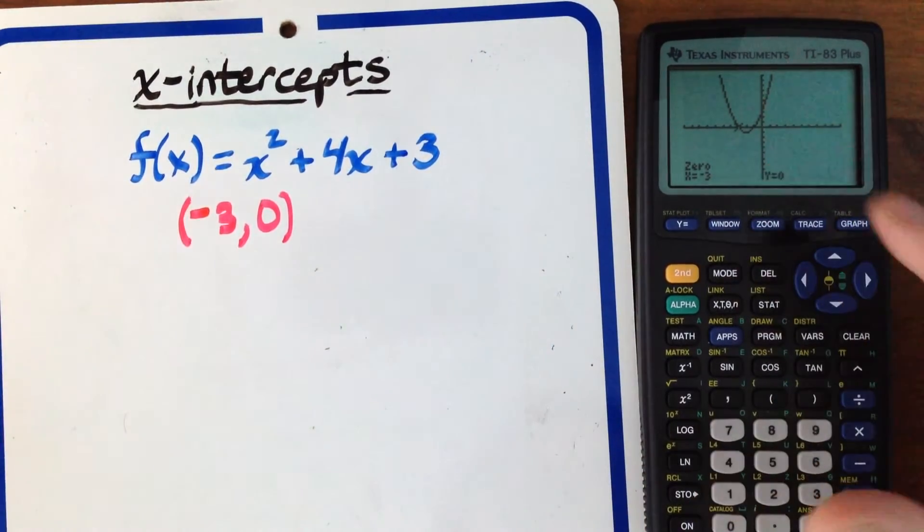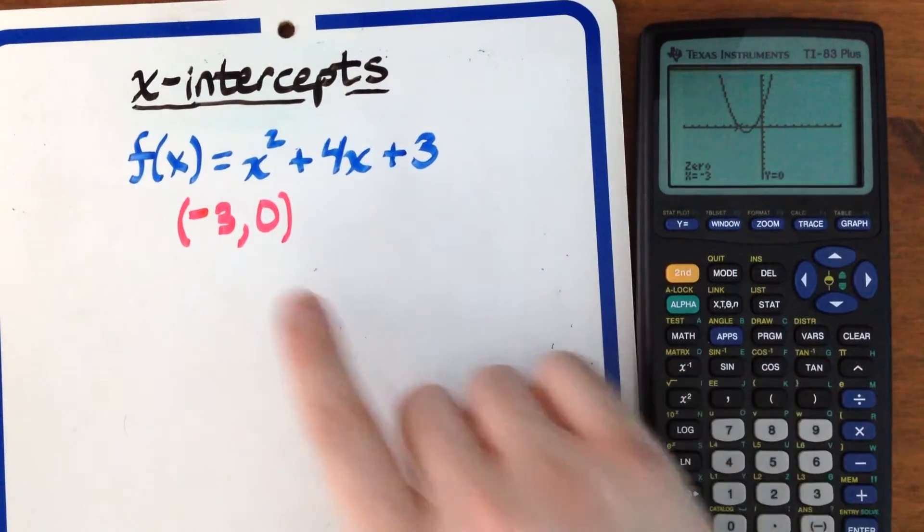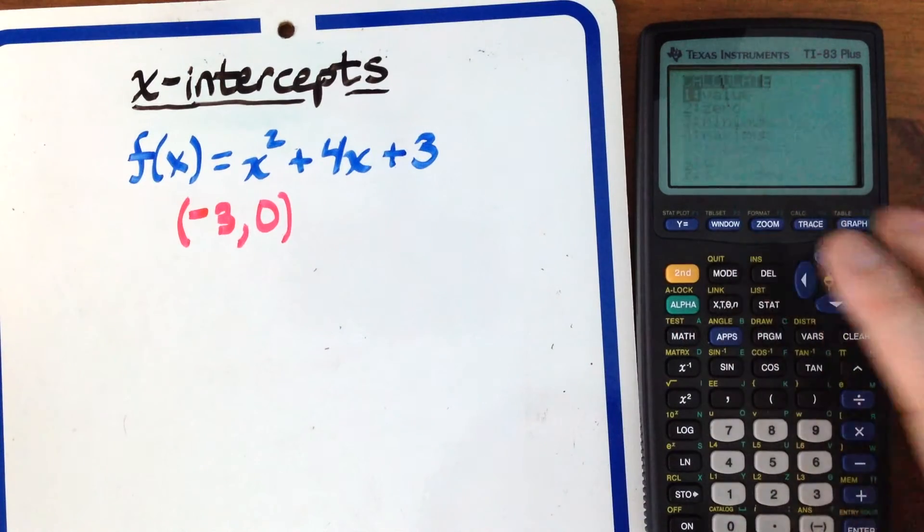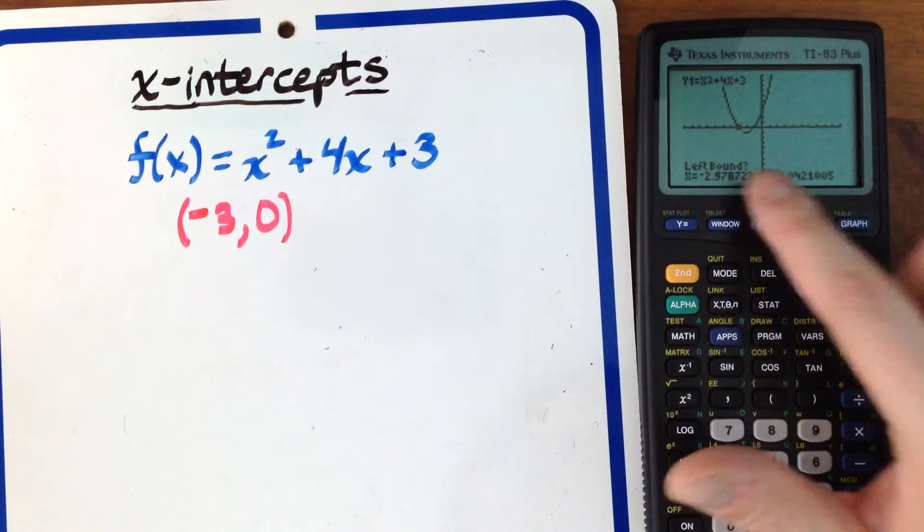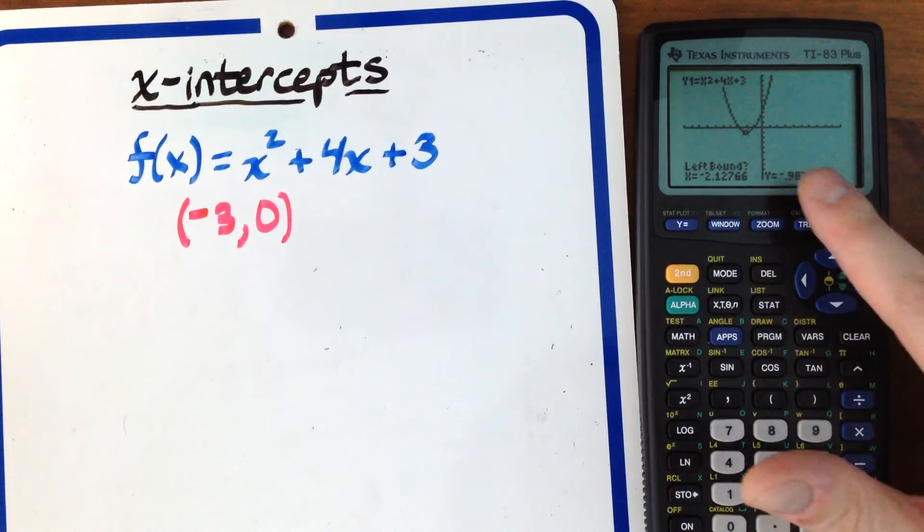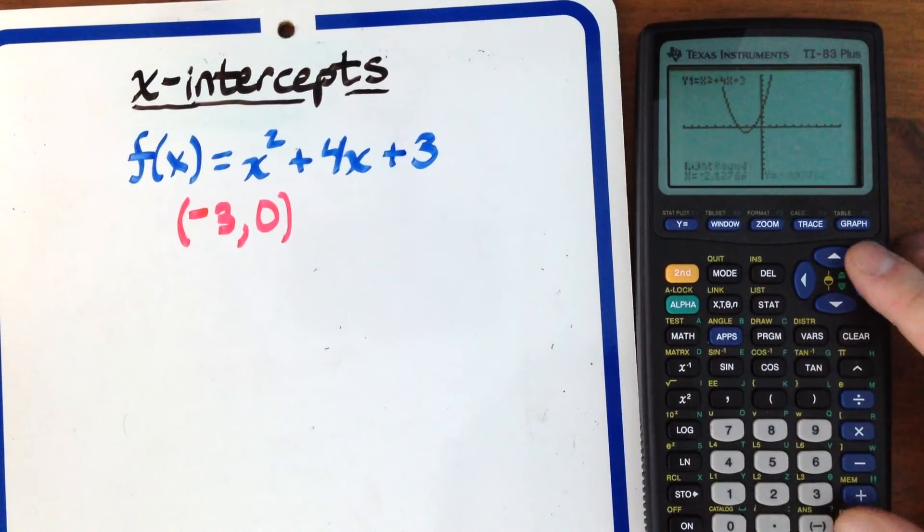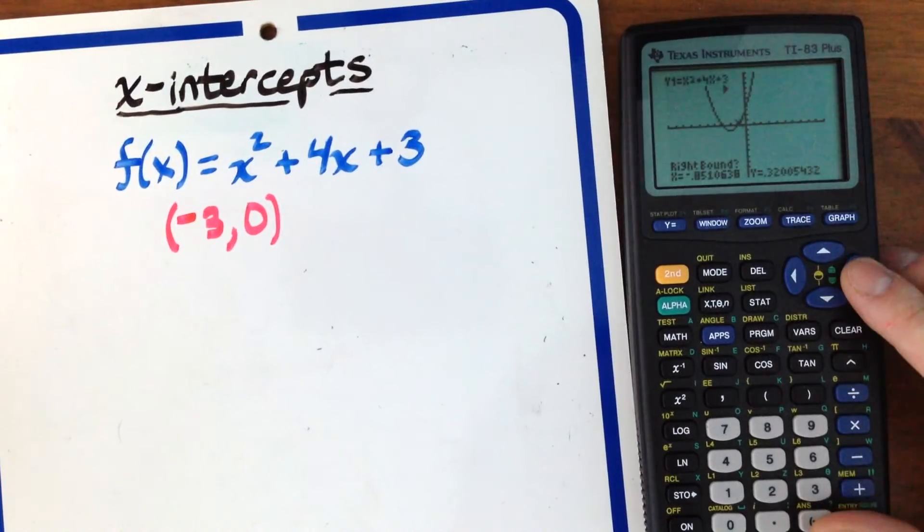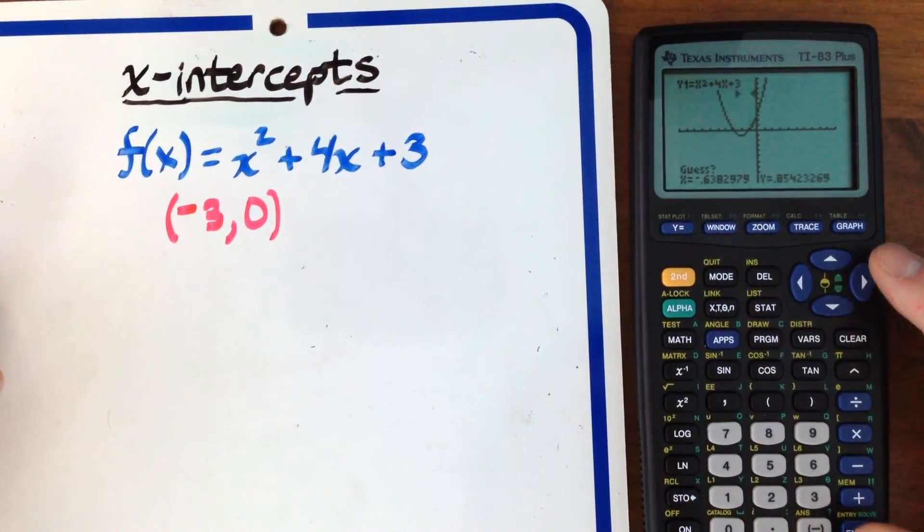The other intercept is on the right. We'll find it the same way, so press 2nd Calc, zero. It asks for the left bound. The left bound is over here because the x-intercept is right there. Hit Enter, then move to the other side and press Enter.